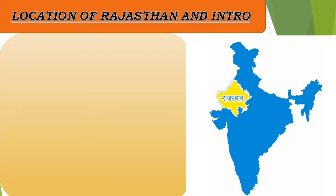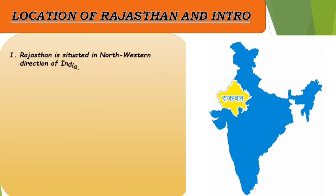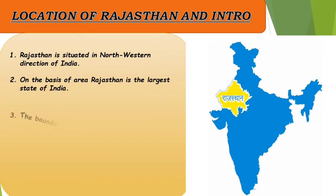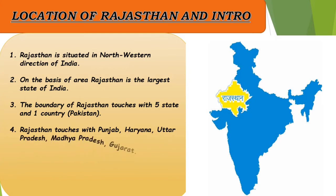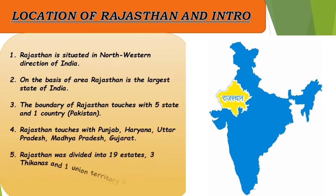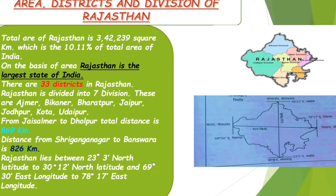Let's start with the location of Rajasthan. If we look at the map of India, we find that Rajasthan is situated in the northwestern direction of India. Rajasthan is the largest state of India. It makes both domestic and international boundaries — it touches five states and one country. The states are Punjab, Haryana, Uttar Pradesh, Madhya Pradesh, and Gujarat; and the country is Pakistan. Before independence, Rajasthan was divided into 19 states, three thikanas, and one union territory.